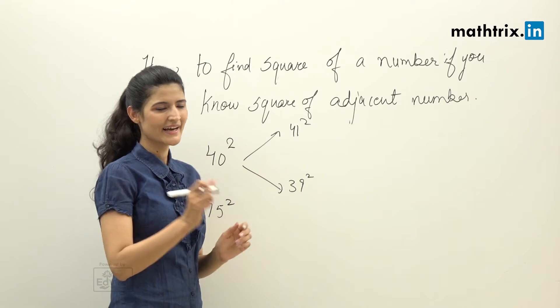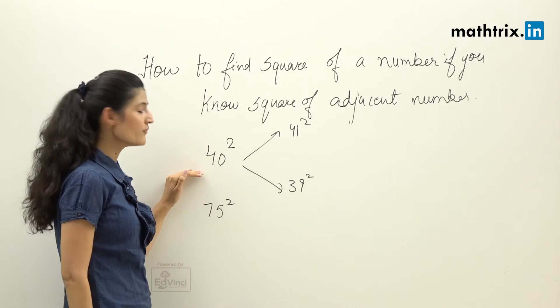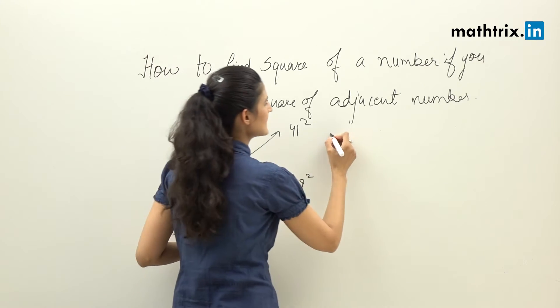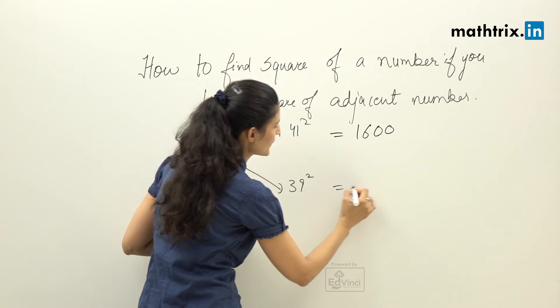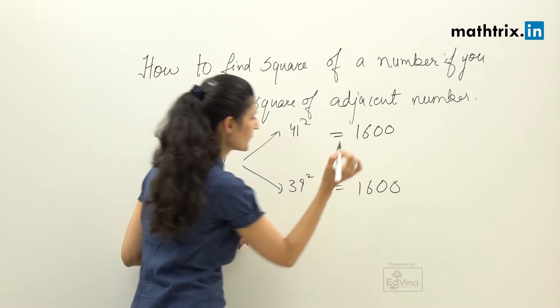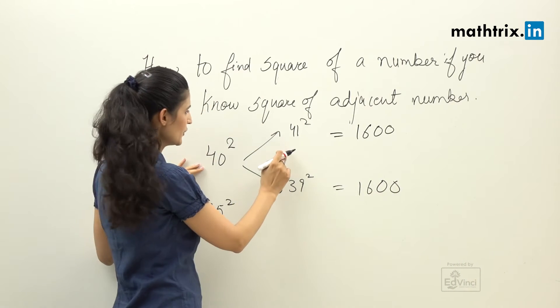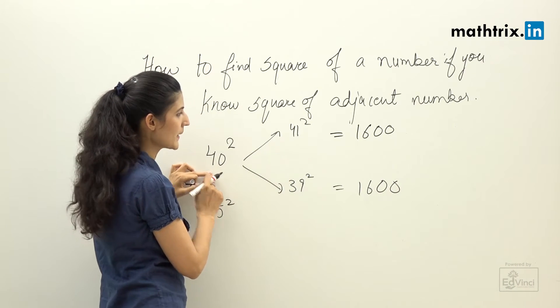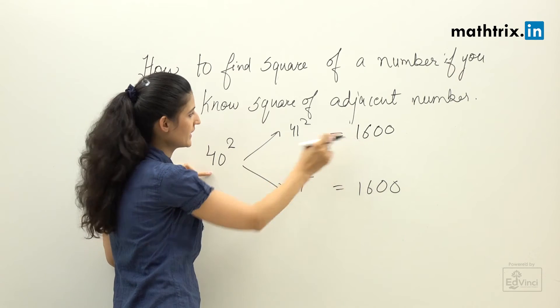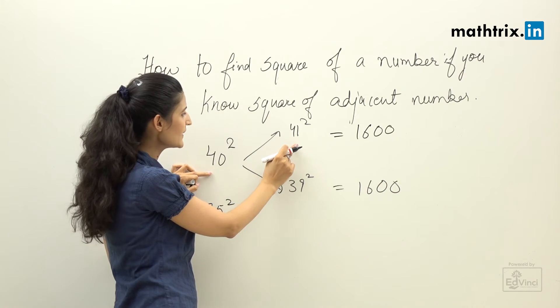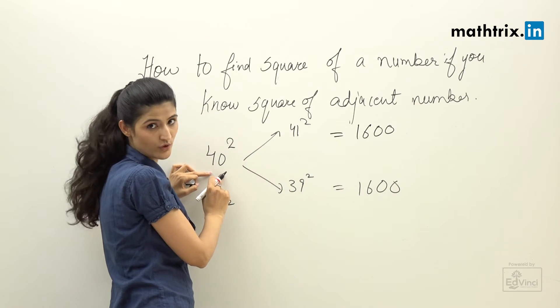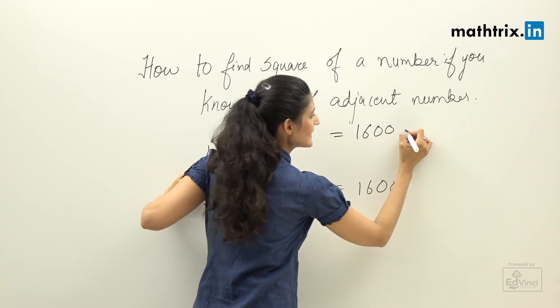You want to know how did I calculate? It's very simple. You know 40 square, which is 1600, and we'll write it here as well. So let's take a look here. We know 40 square equals 1600, and we have to find 41 square. As we know, 41 is greater than 40, so we have to add.